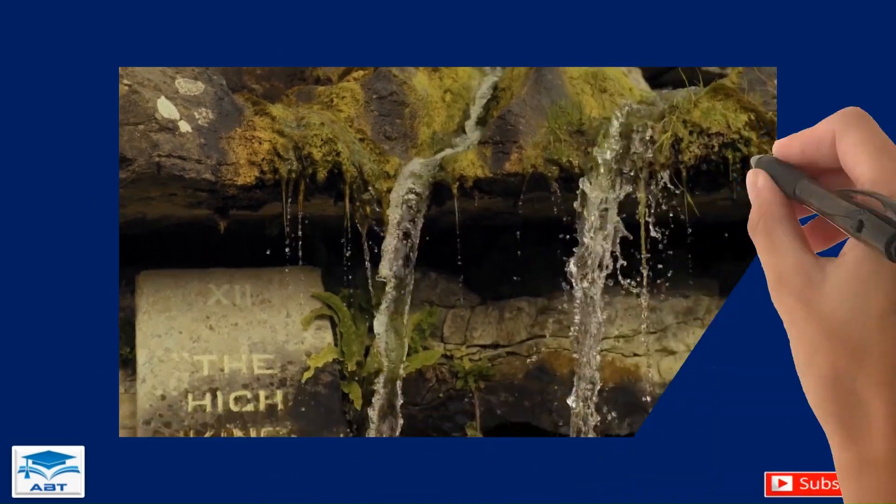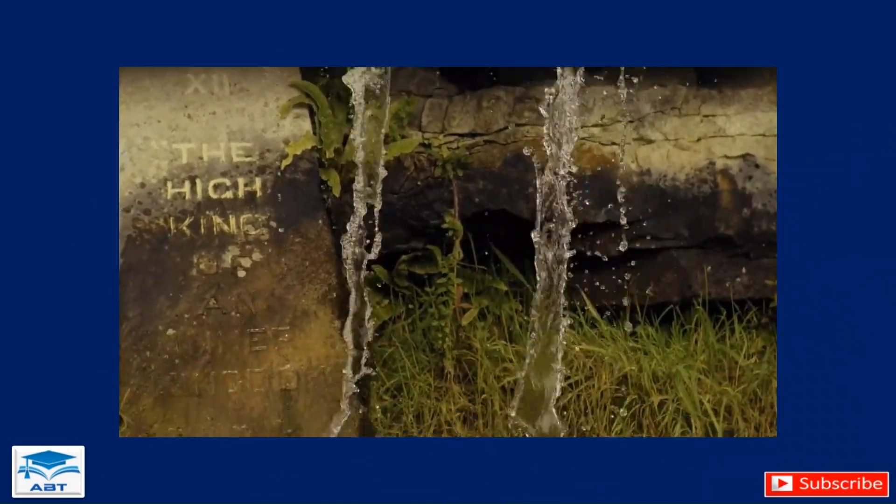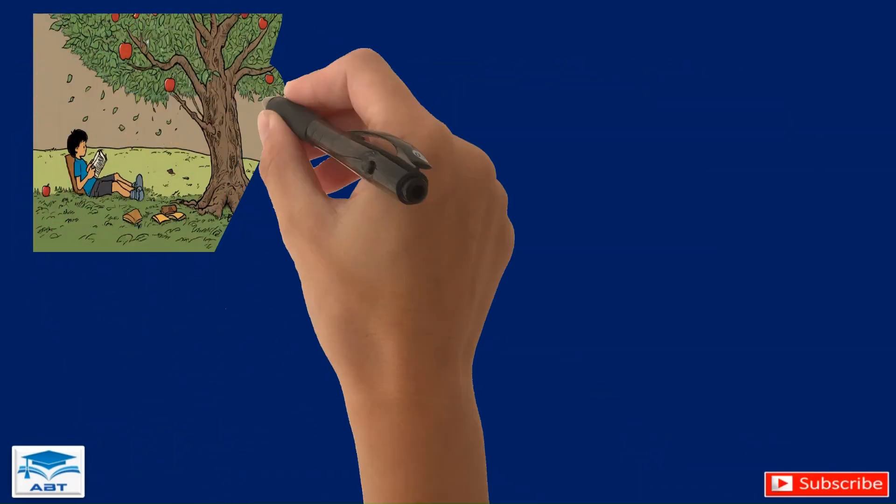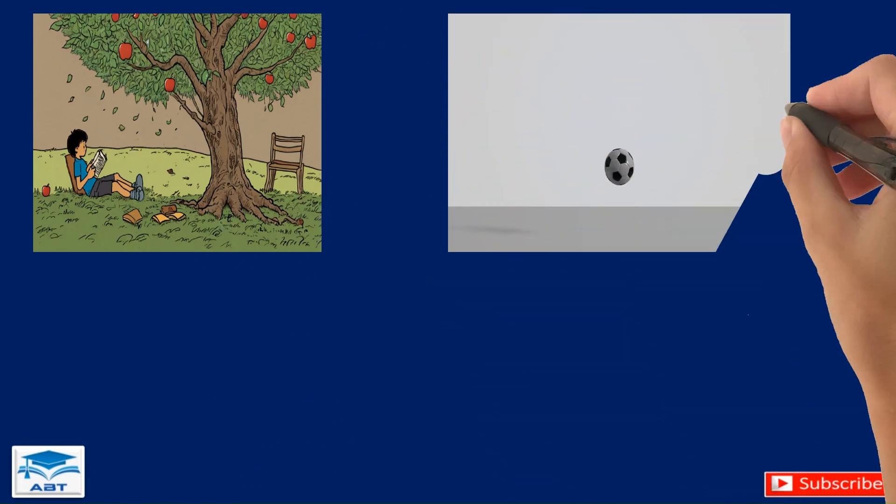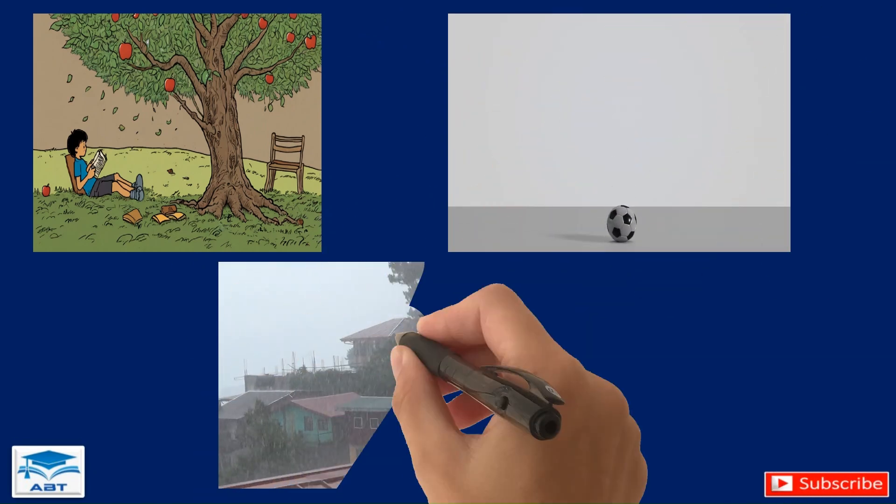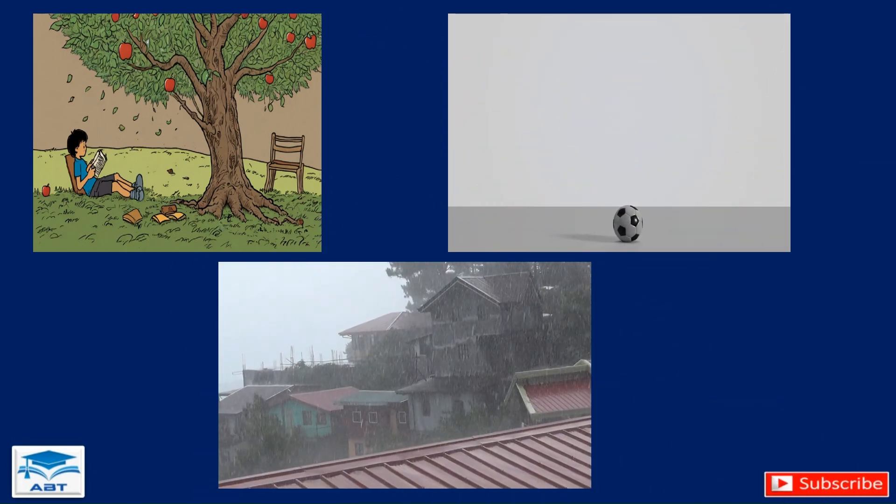Have you ever wondered why things always fall down to the ground? Whether it's an apple from a tree, a ball you toss in the air, or even rain from the clouds, it's all because of a force we experience every day but often take for granted: gravity.